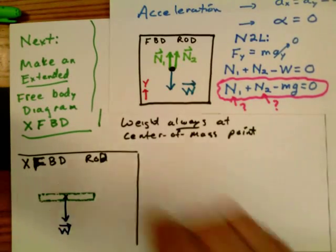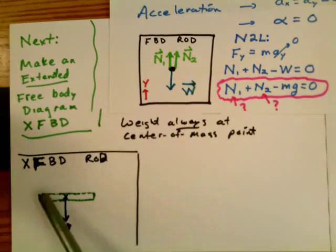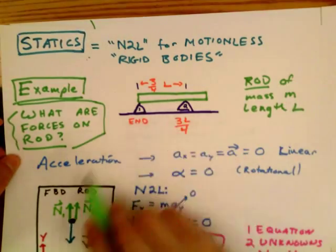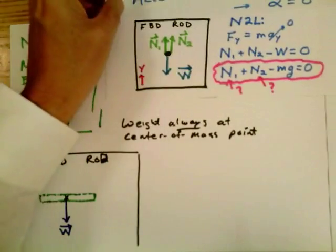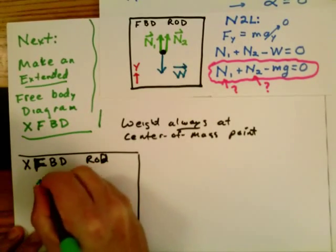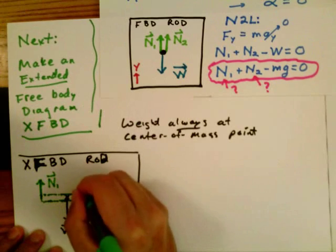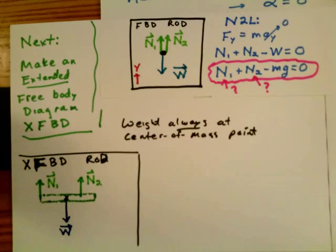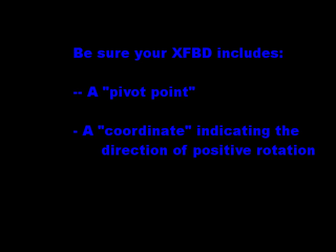And then we have the two normal forces. And of course, we know where the normal forces apply because we can see the picture where the two trestles are. One normal force applies on the left and the other applies three-fourths of the way towards the right. So we put exactly those same forces on the extended free body diagram, N1 on the left and N2 three-fourths of the way over. It's very important that they have exactly the same forces on both diagrams.